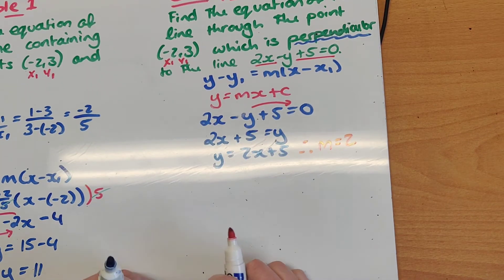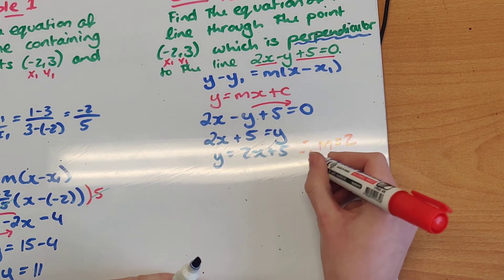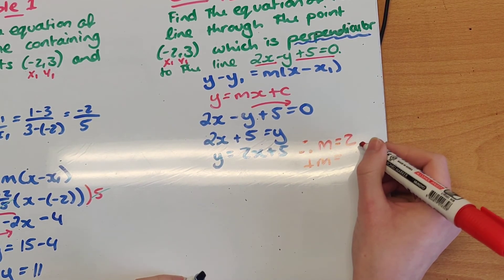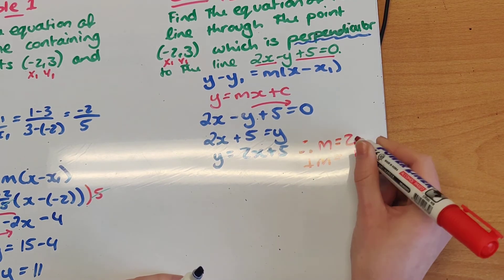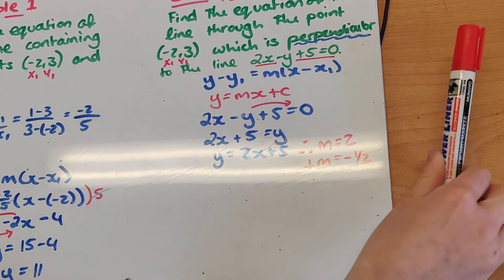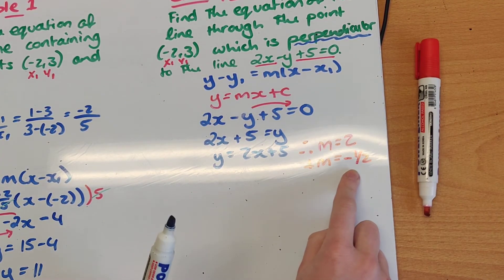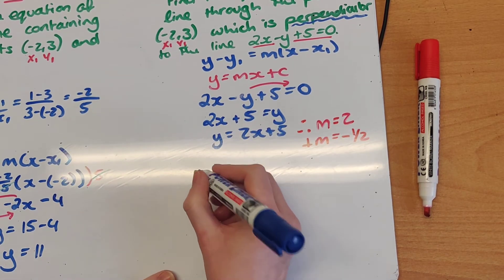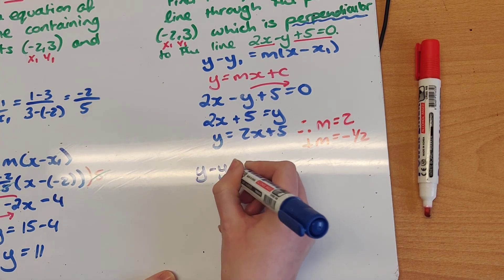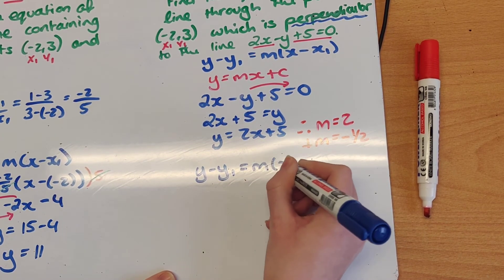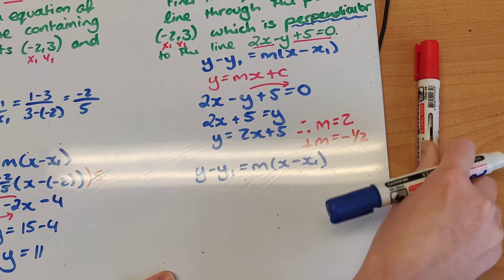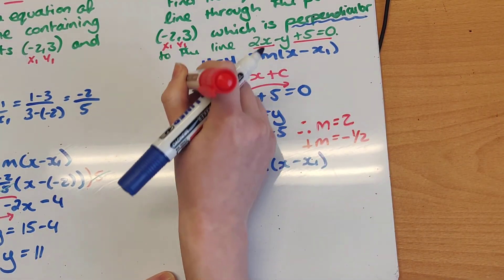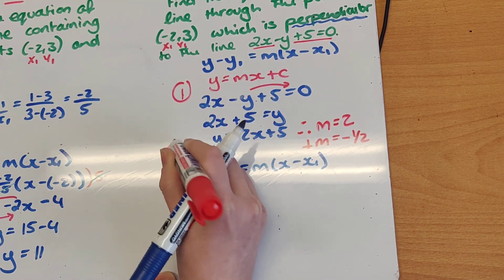If my slope is equal to 2, to find my perpendicular slope I flip it and change the sign. So 2 is really 2 over 1; flipped is 1 over 2, and if it was a plus it's now a minus. So my perpendicular slope is minus 1 half. I'm going to use that with my point x1, y1 to find the new equation of a line. If that was step 1, we're now on to step 2.